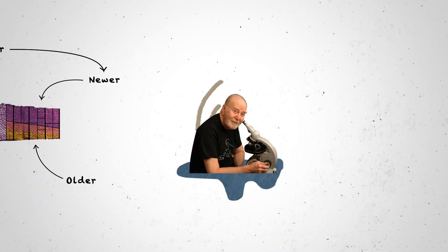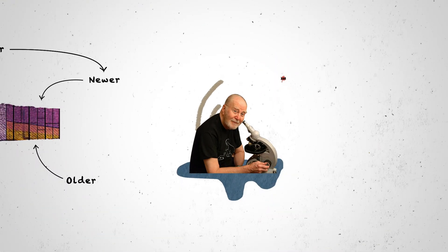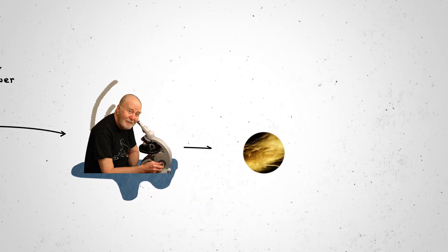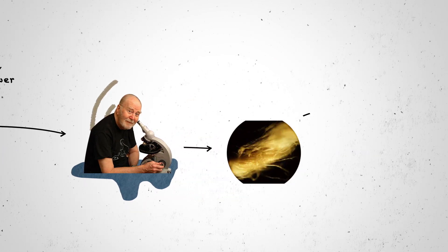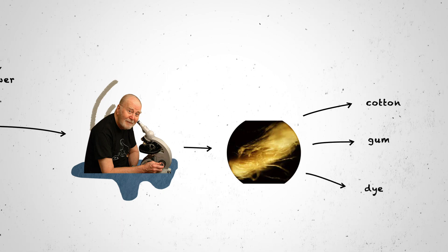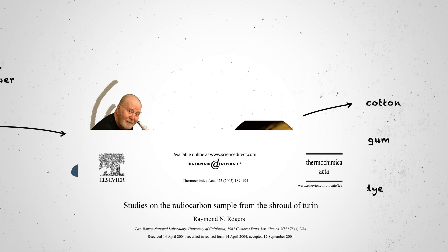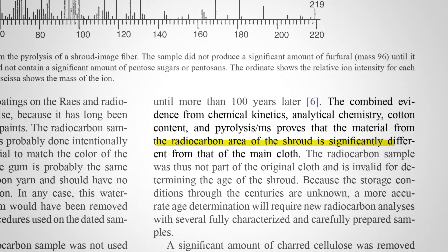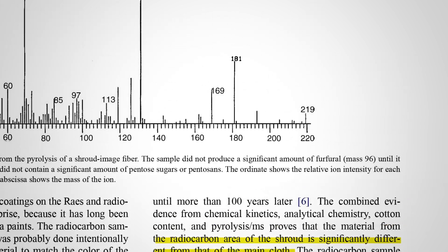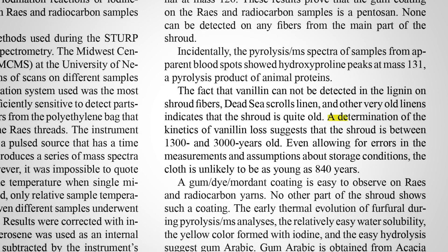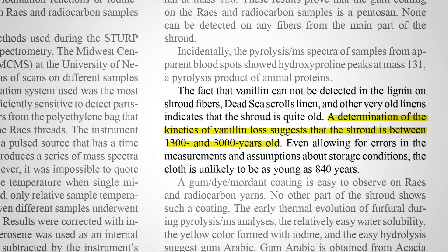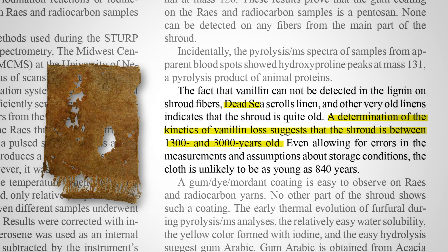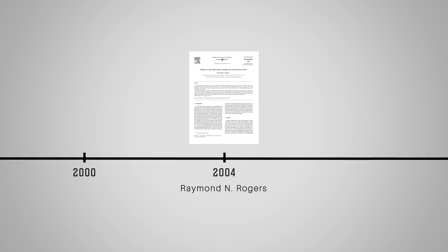Benford and Marino were not scientists able to prove those claims. Later, Ray Rogers, the lead chemist of the STURP team, was initially skeptical about their claims. So he took a leftover sample, examined it under a microscope, and found traces of cotton, gum, and dye that were not present in the rest of the cloth. In 2005, he published findings in a secular scientific journal, concluding that the material used in radiocarbon dating was significantly different from the main cloth and that the sample was poorly chosen. Due to the loss of vanillin in the Shroud fiber, he suggested the Shroud is between 1,300 to 3,000 years old — similar to the linen found with the Dead Sea Scrolls — making it the first scientific journal to challenge the 1988 carbon dating.